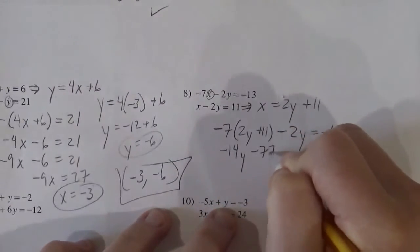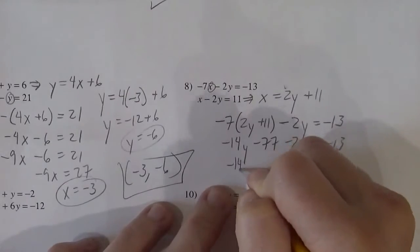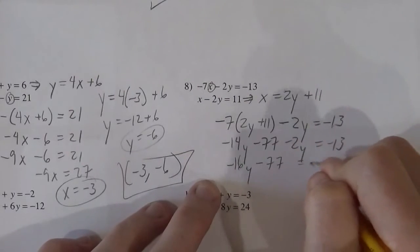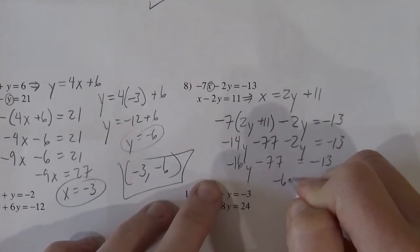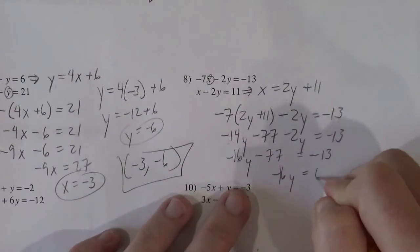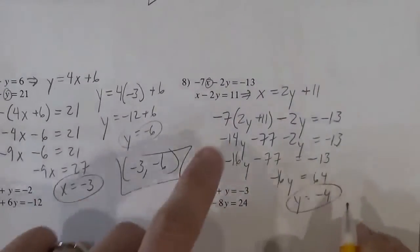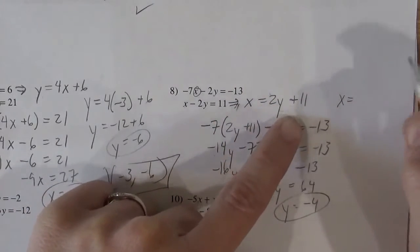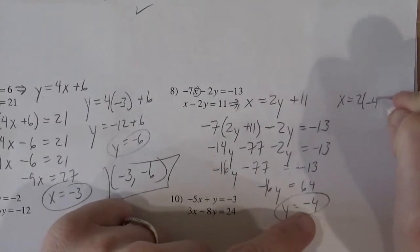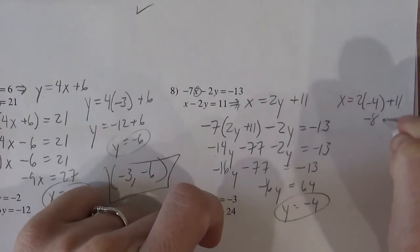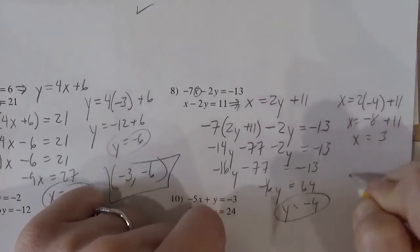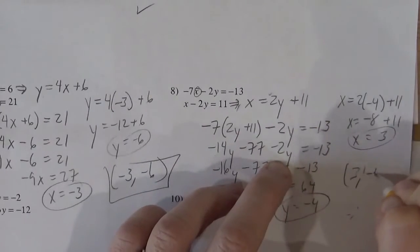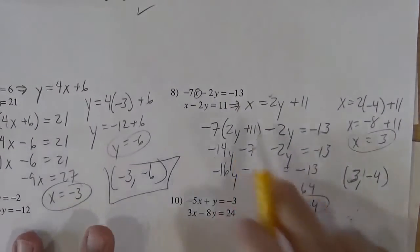Just keep going now. Now we're home free. So negative 14y, negative 16y, minus 77 equals negative 13. So negative 16y equals 64. So y is negative 4. And then to get the x, you've already got this lovely equation set up that says that x should be 2 times the y value plus 11. So 2 times the negative 4 plus 11. So negative 8 plus 11. So x equals 3. So the x is 3 and the y is negative 4. And those are the x and y that make both of those true. I leave it to you to test them.